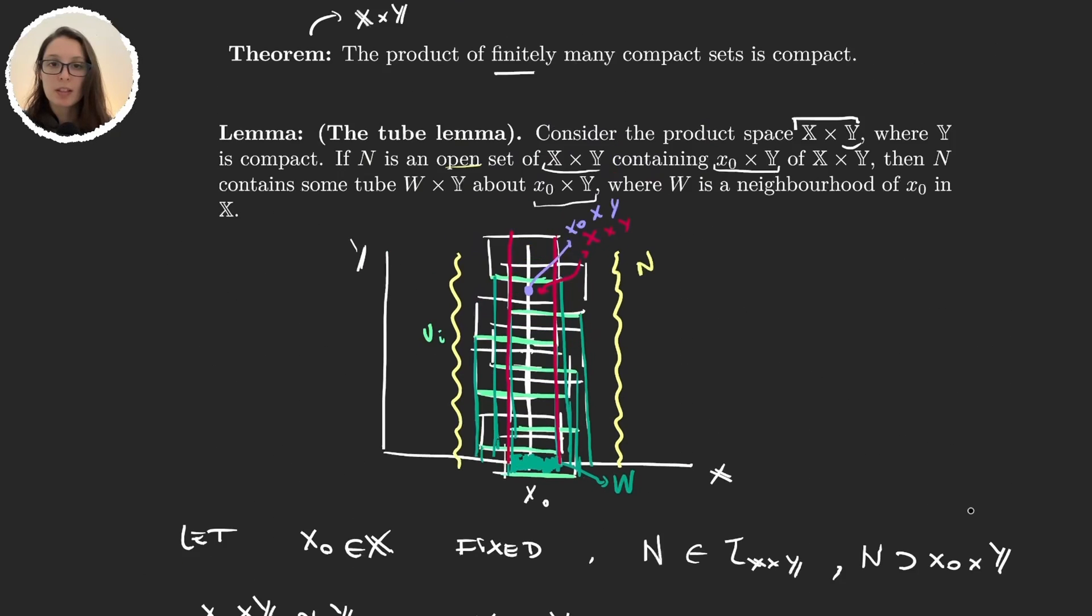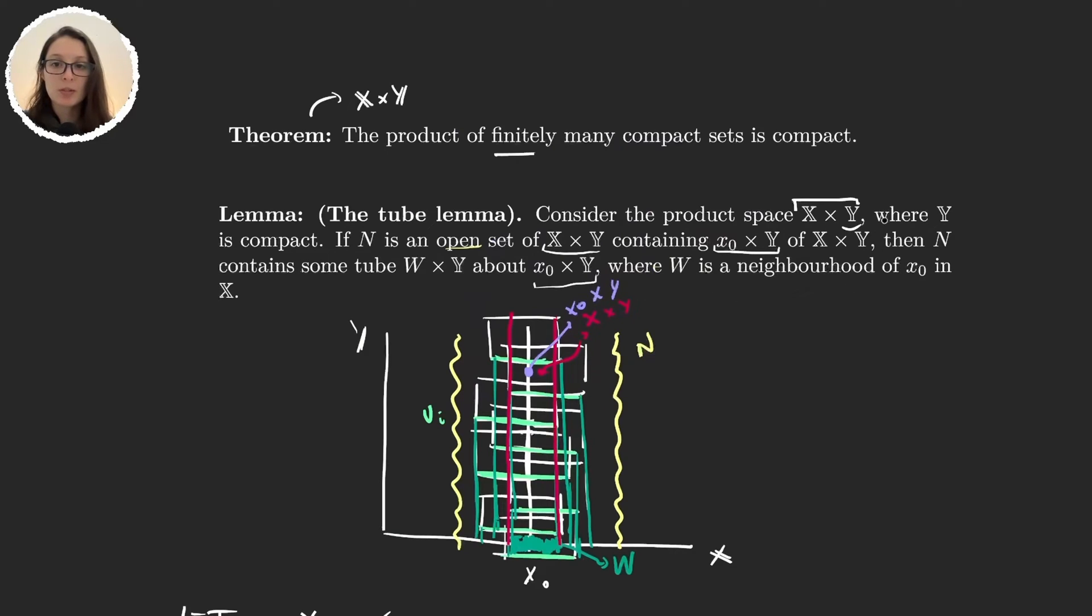We now know that if we are in the product of two spaces, where the second space is compact, and we take N, an open set that contains x₀ times Y for some x₀ in X, then N will contain a tube around that set. Now let's see how we can use this lemma to prove the theorem.